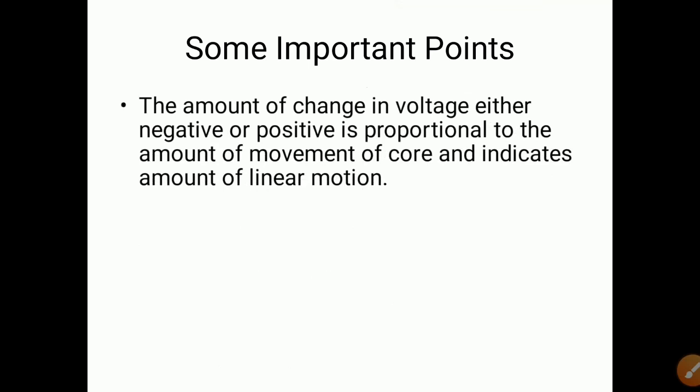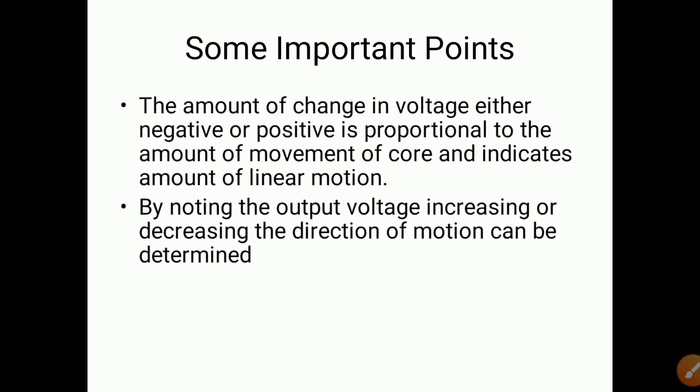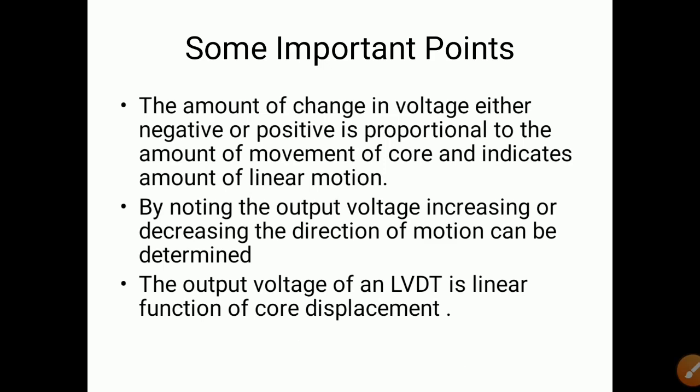The amount of change in voltage, either negative or positive, is proportional to the amount of movement of the core, and it indicates the amount of linear motion. The amount of core movement is directly proportional to the voltage produced, and it is used directly as a measurement of linear displacement. By noting whether the output voltage is increasing or decreasing, the direction of motion can be determined. The output voltage of an LVDT is a linear function of core displacement.